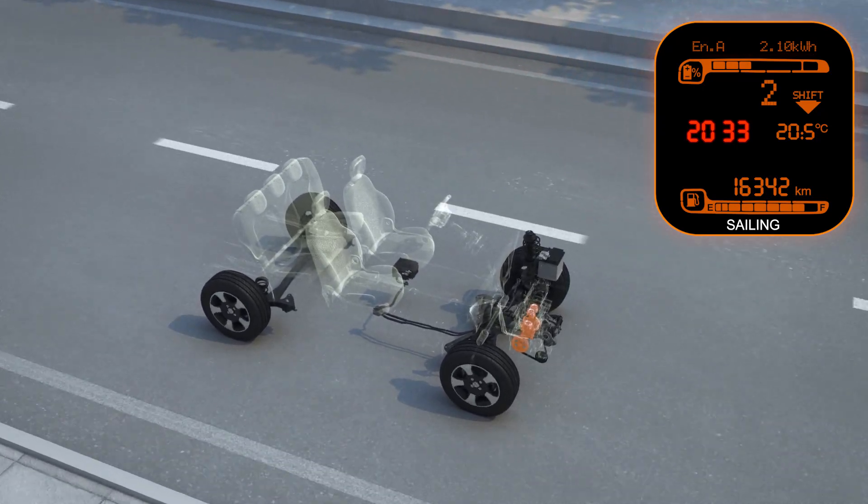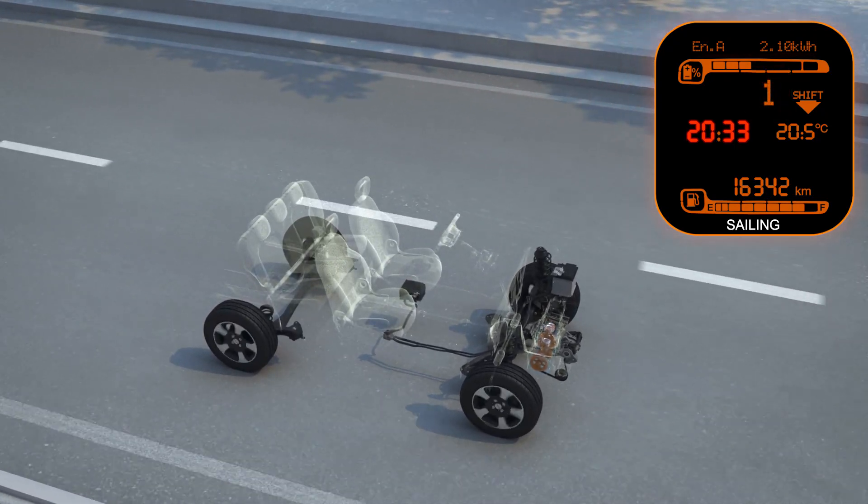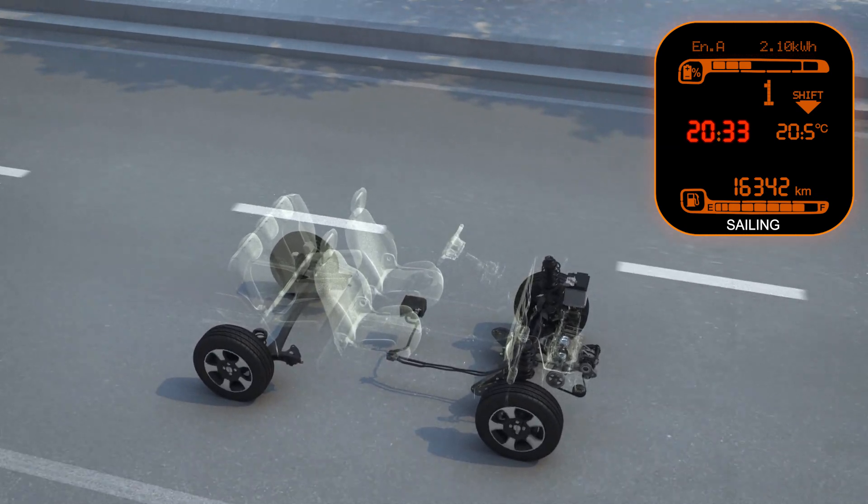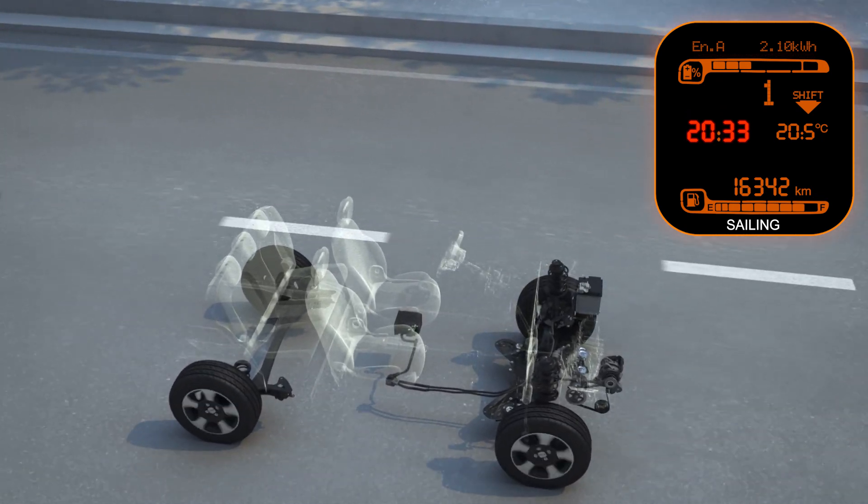At traffic lights, or if you need to stop the car, the extended stop and start system can keep the engine turned off in sailing mode until the vehicle is stopped.